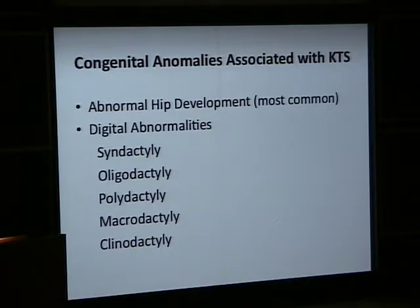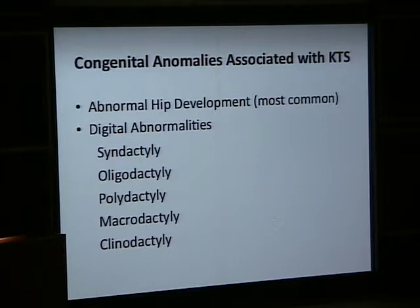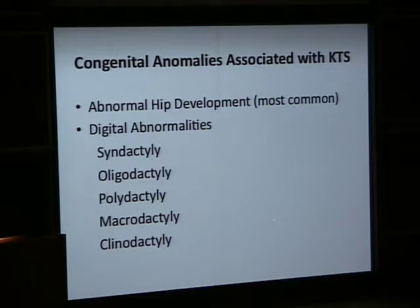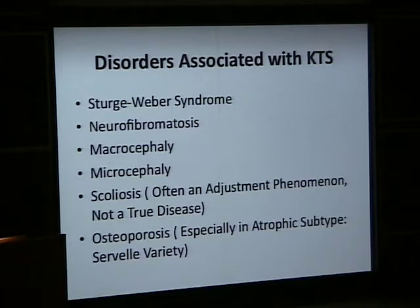What are some other congenital abnormalities or syndromes associated with KTS? Hip developmental abnormalities are most common, ranging from very mild to very severe. There can also be digital abnormalities — fused fingers, extra digits, or dysmorphic features of the digits. KTS can also be associated with Sturge-Weber syndrome and other abnormalities.